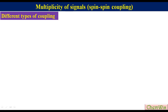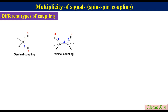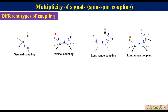Different types of coupling. In Proton NMR, spin-spin coupling occurs between two non-equivalent protons. The spin-spin coupling is through bond. Based on the number of bonds between the two coupled protons, there are three types of spin-spin coupling: geminal coupling, in which the two coupled protons are on the same carbon, separated by two bonds; vicinal coupling, in which the two interacting protons are on adjacent carbons, separated by three bonds; and long range coupling, in which the two interacting protons are separated by more than three bonds.